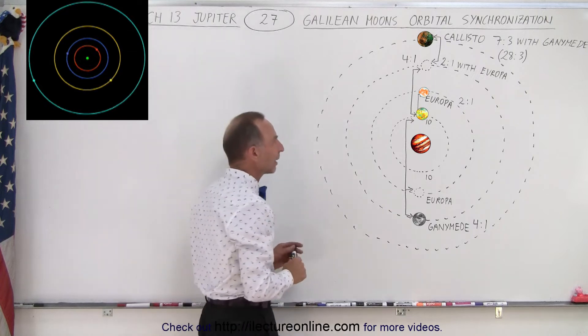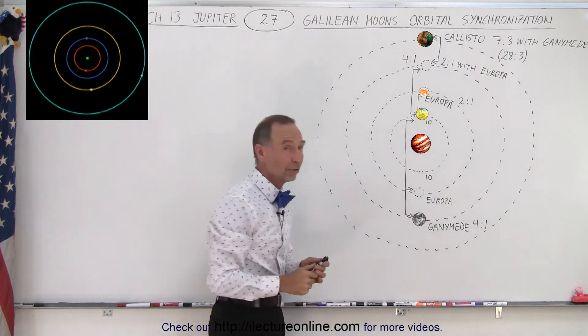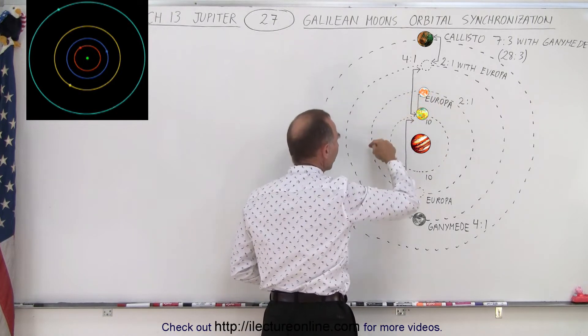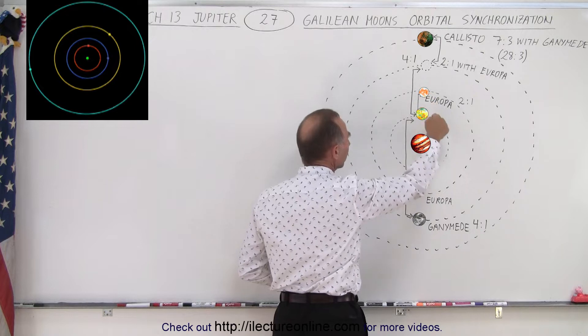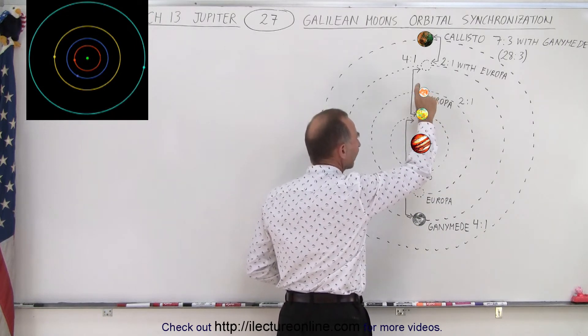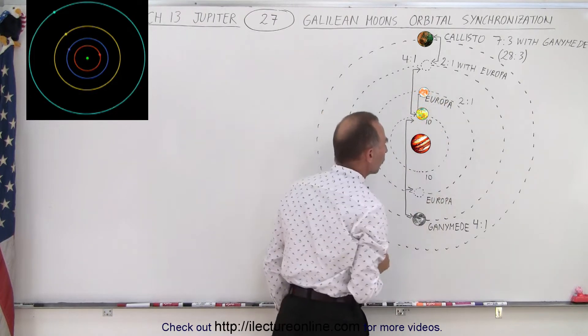Now it turns out that Europa and Io are in a two-to-one synchronization, which means that for every one trip of Europa around Jupiter, Io takes two trips and they meet opposite to one another at the same time once every orbit of Europa.